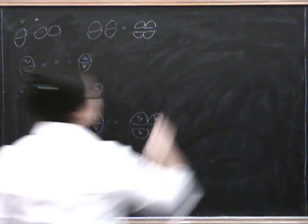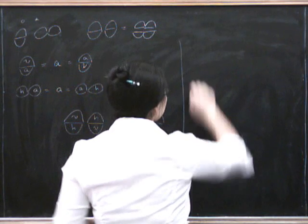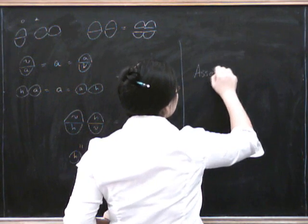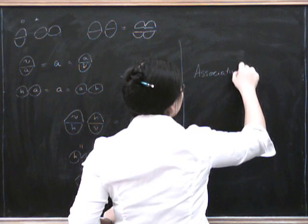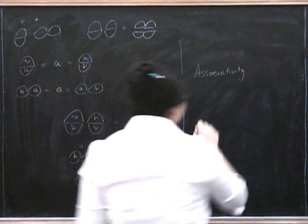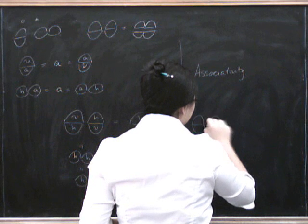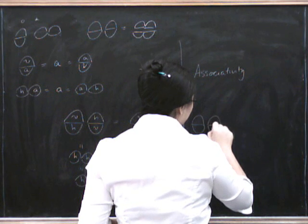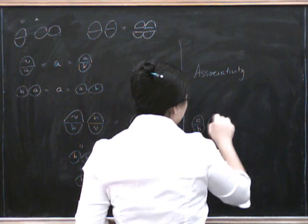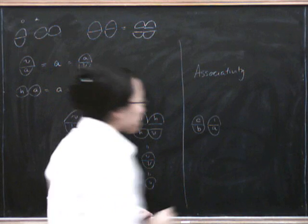We can do a similar trick for associativity. This time we need to involve A, B, and C. So we put A here, B here, C here, and a unit there.